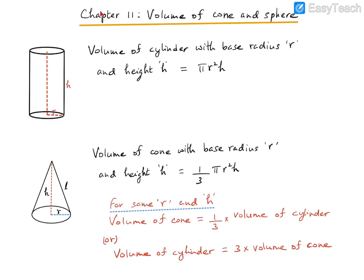Previously in chapter 11 we have been discussing the surface areas of various solid objects like the surface area of a cylinder, cone, sphere, and hemisphere. Now we move on to the next part of this chapter, which is the volumes part. We are going to talk about the volume of a cone and a sphere, and in this video we will focus only on exercise problems related to the volume of a cone.